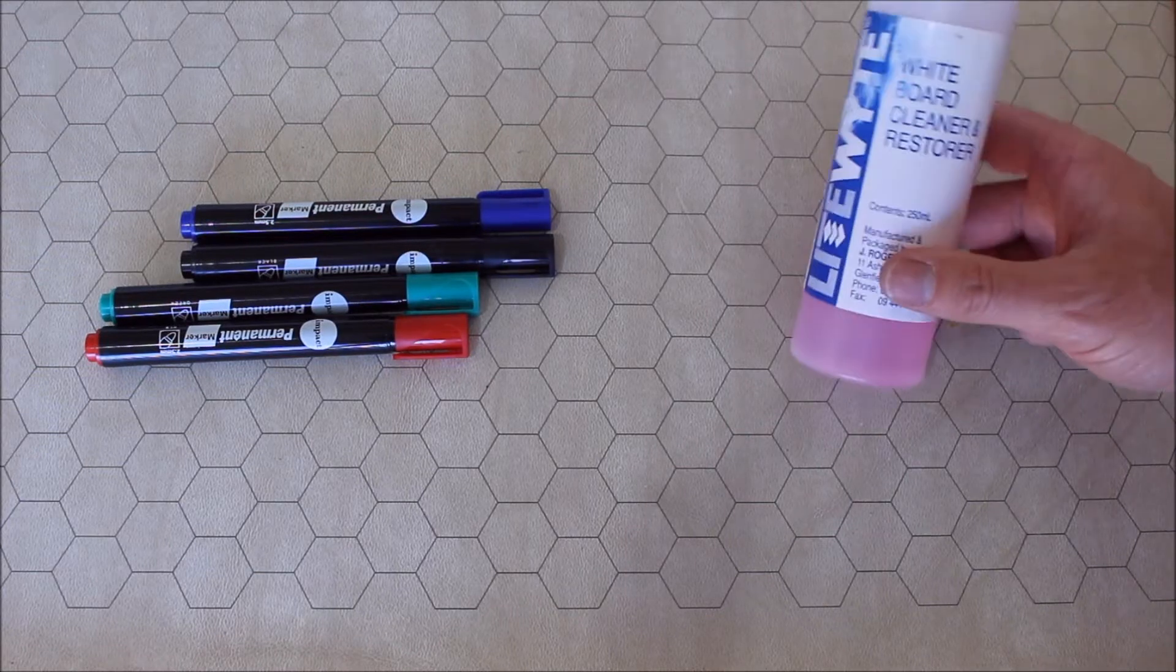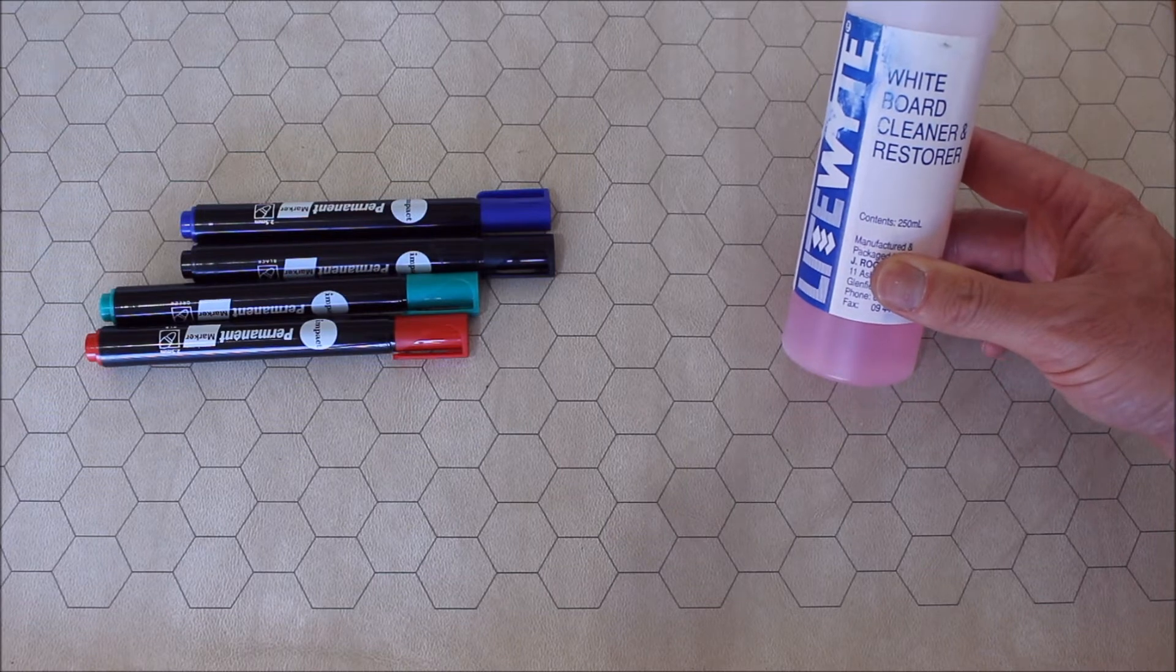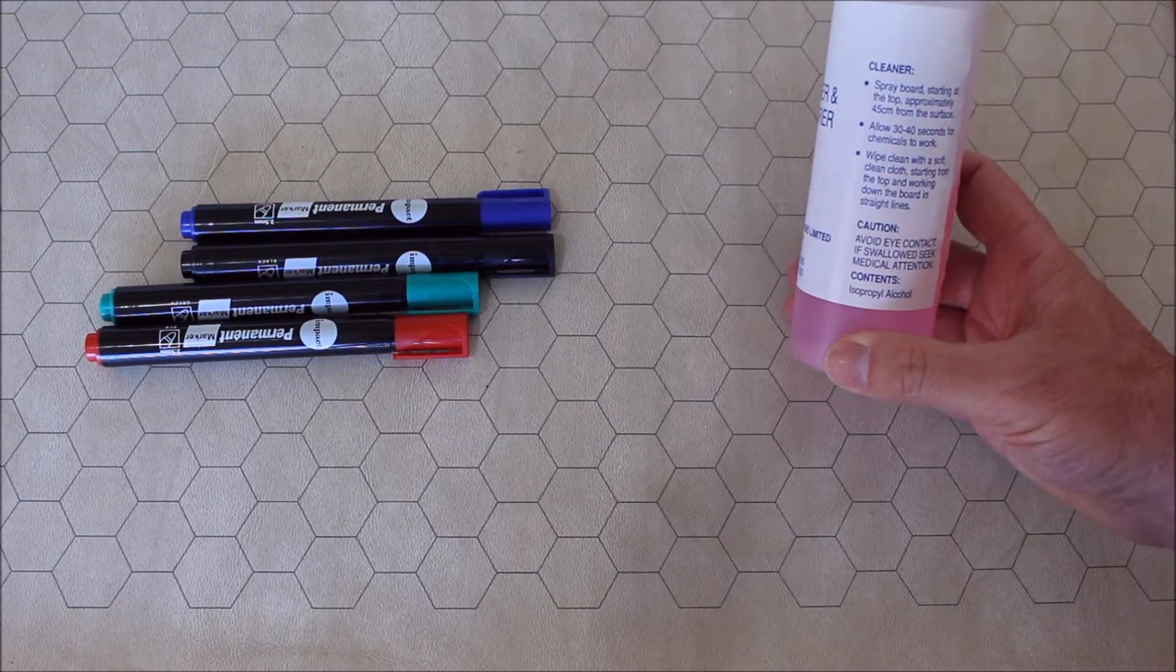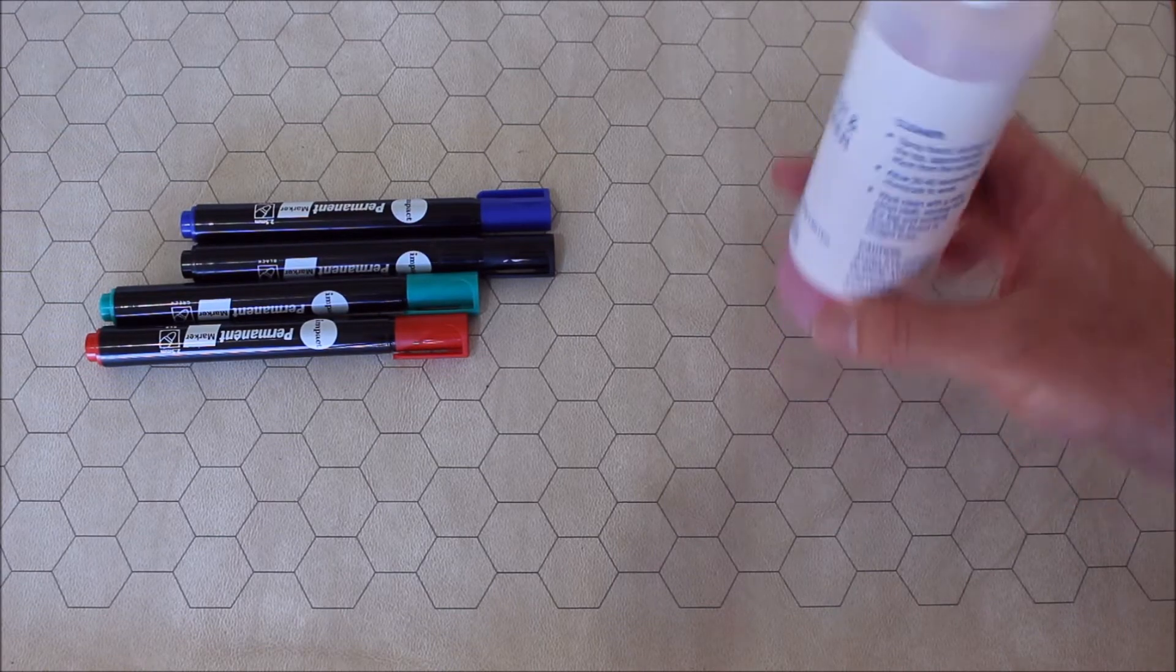The next method for cleaning off permanent marks from your vinyl Chessix battle mat is using a whiteboard cleaner or restorer with isopropyl alcohol in it. This has got isopropyl alcohol in it. Let's see if this actually works.